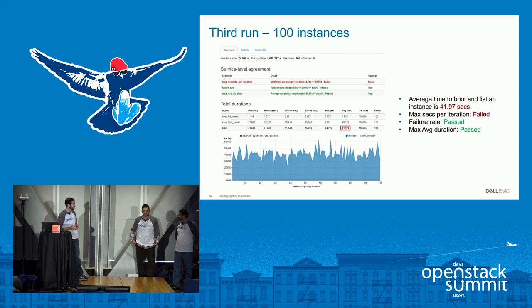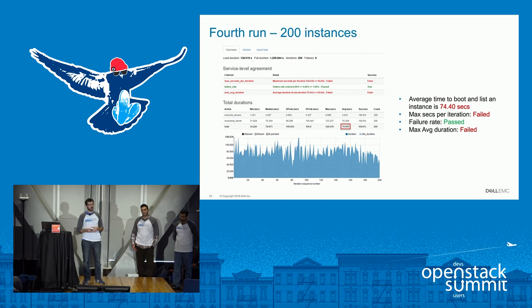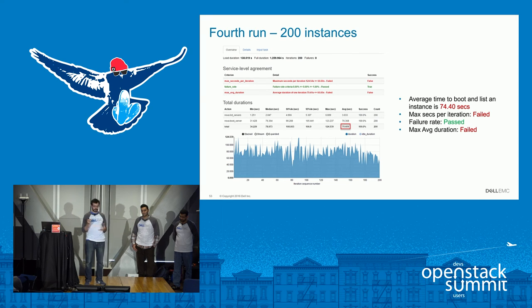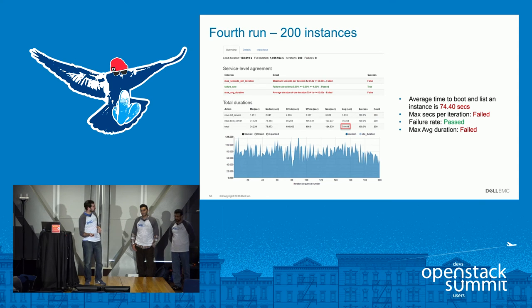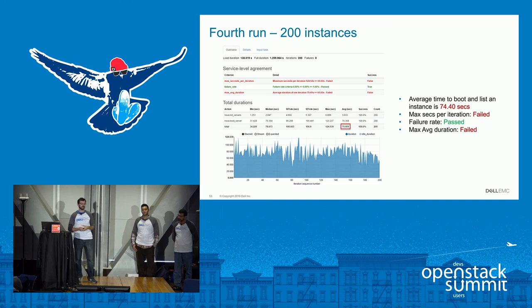Just a side note — this was a home lab environment, not production, so in production you should be able to go higher than this. Then going to 200 instances, the average time to boot and list went through the roof — 74 seconds on average, maximum seconds per iteration was 124, double what we specified, and the maximum average duration also breached. So in this case we could say that 200 instances is the maximum that our cloud could handle.